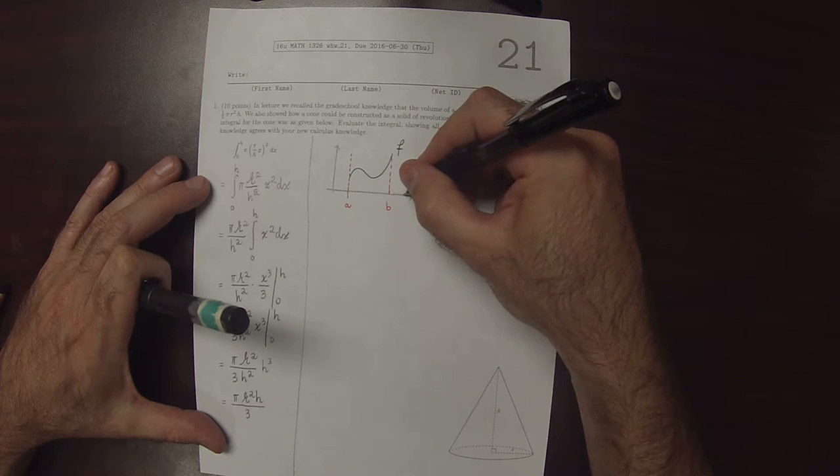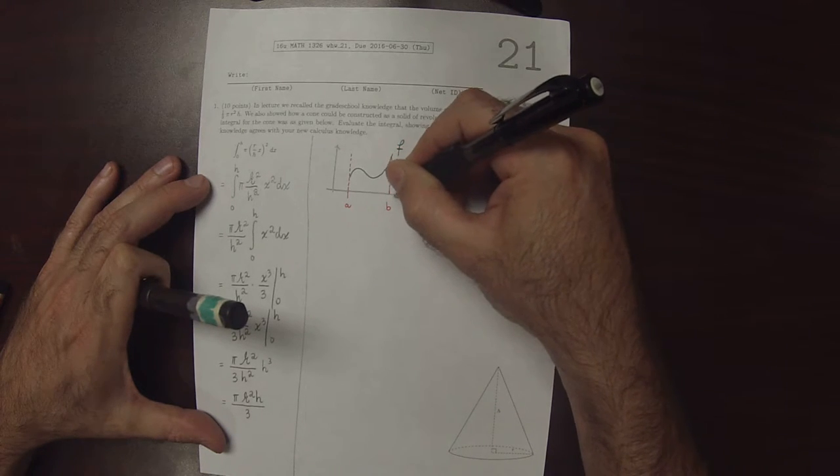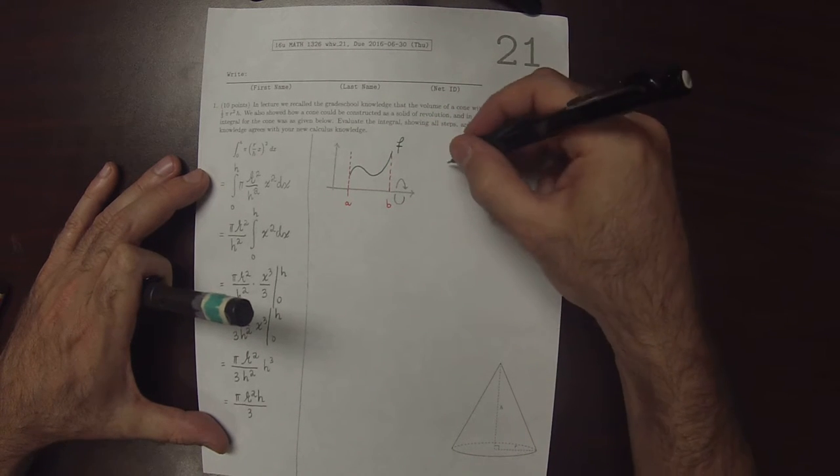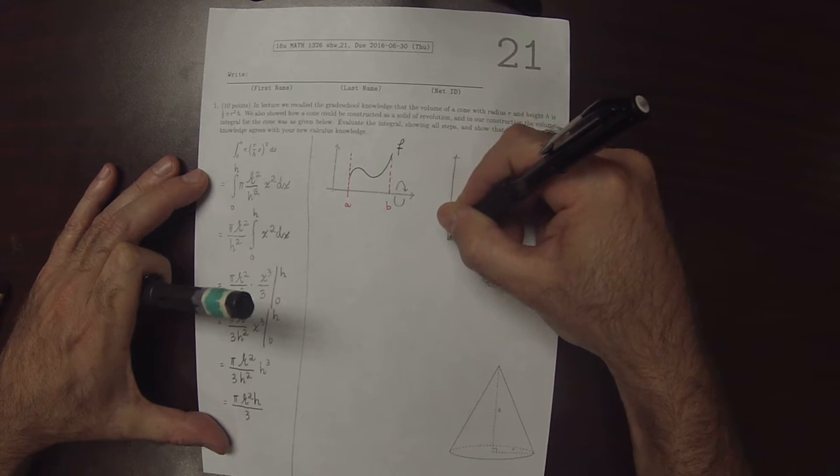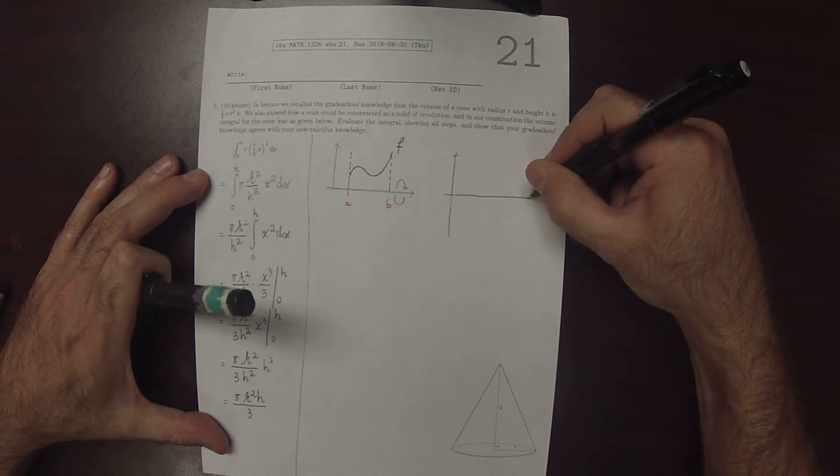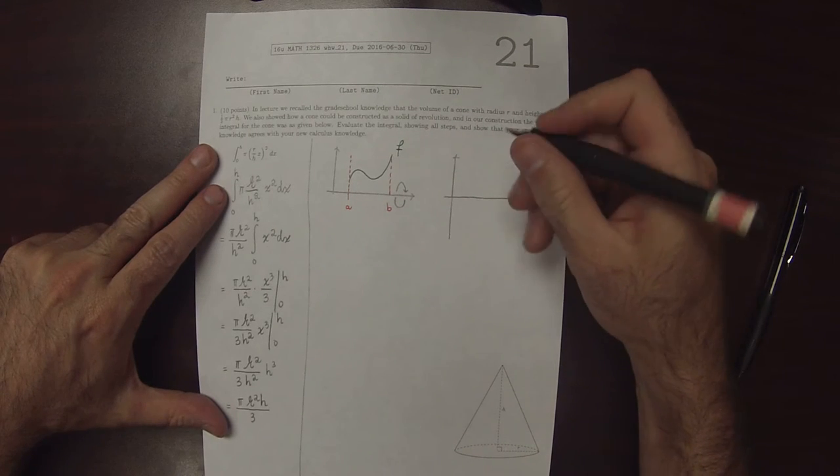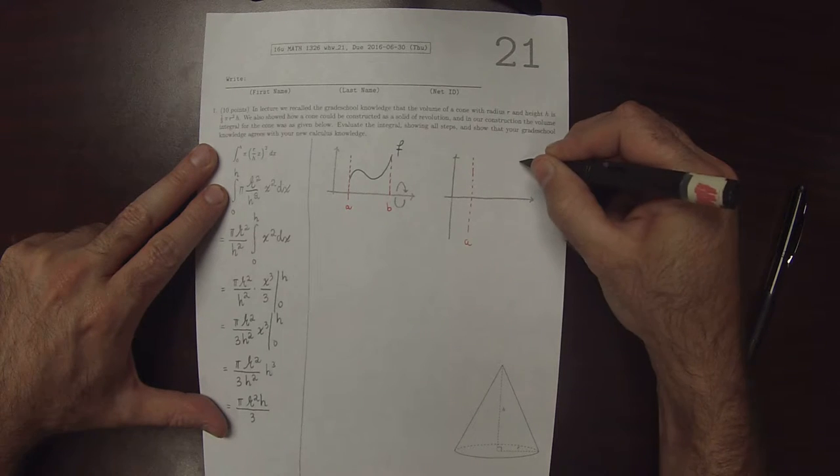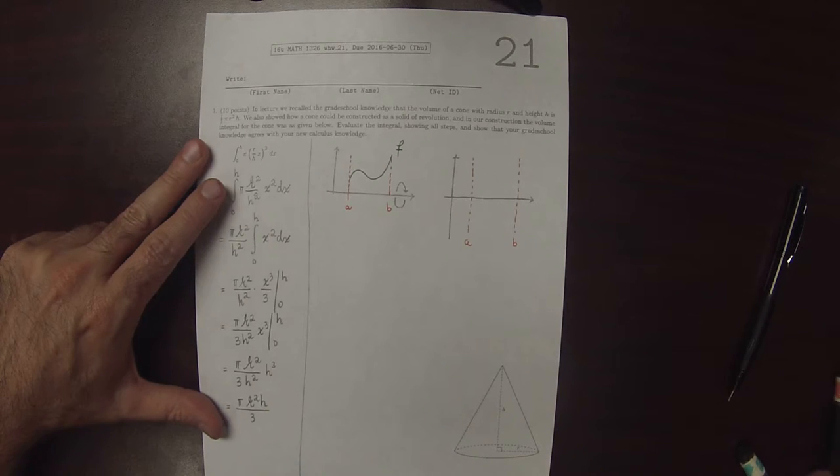And if we do that, so in this way, we perform that revolution, and the shape that we see will look like this.